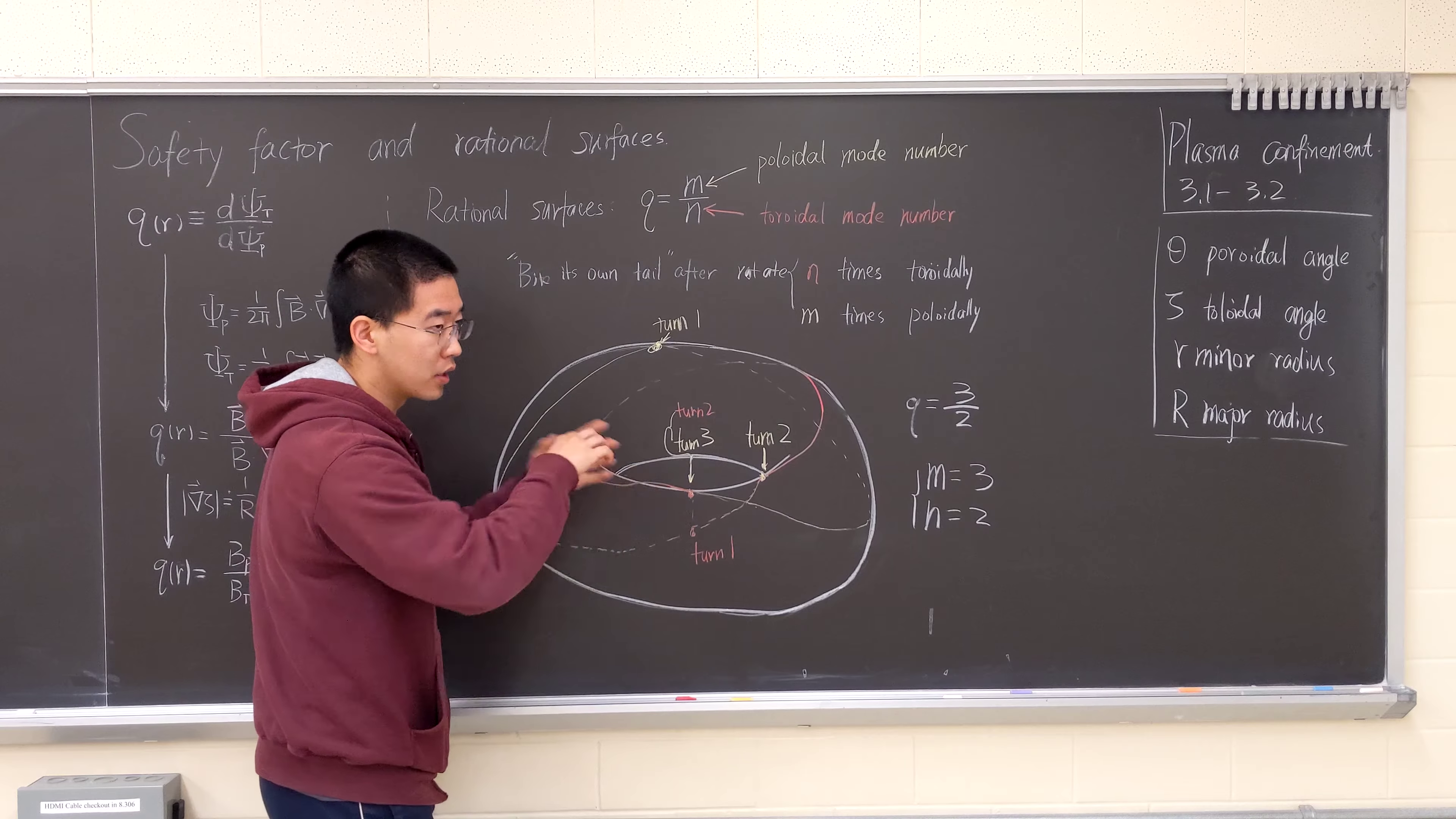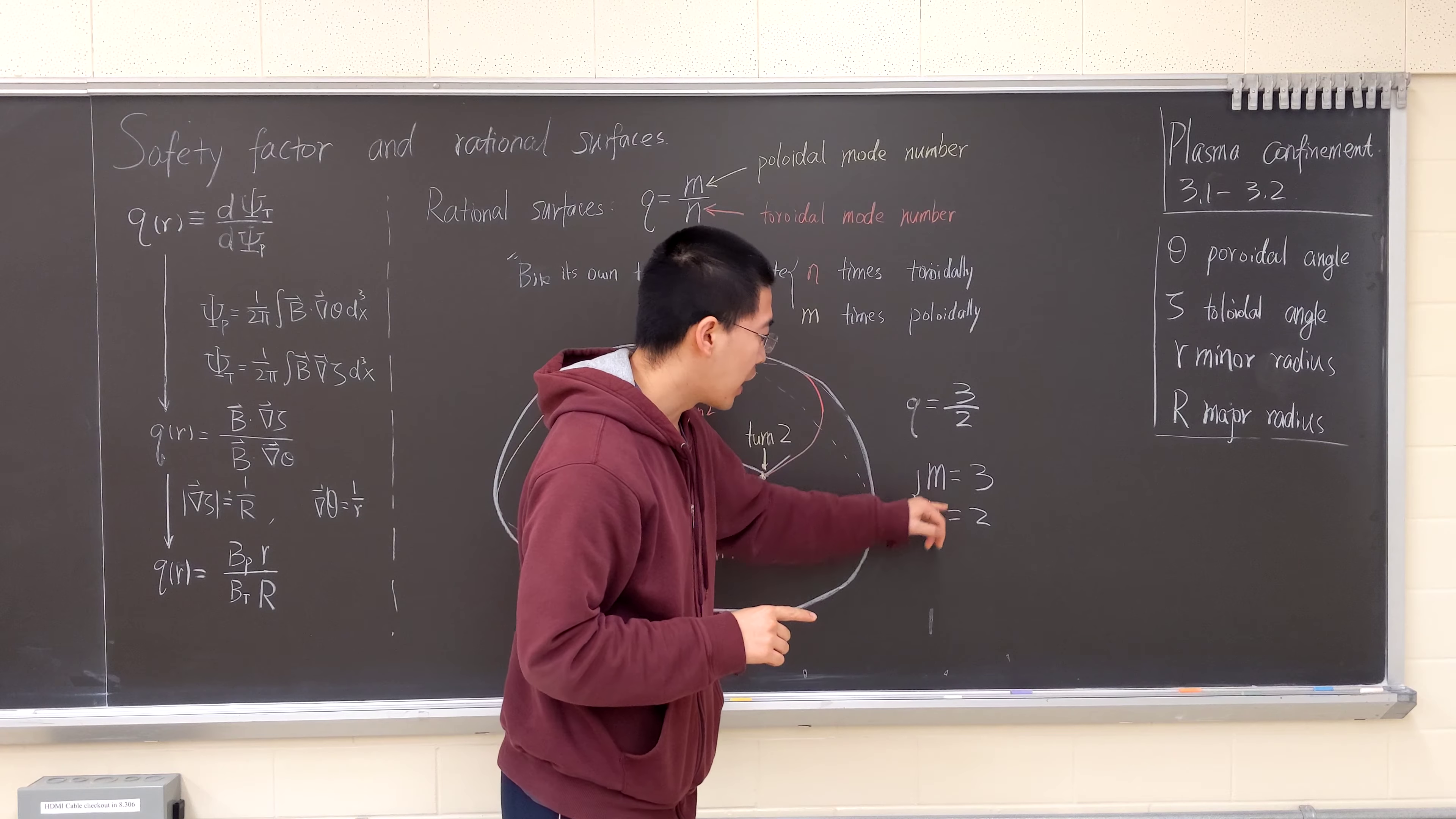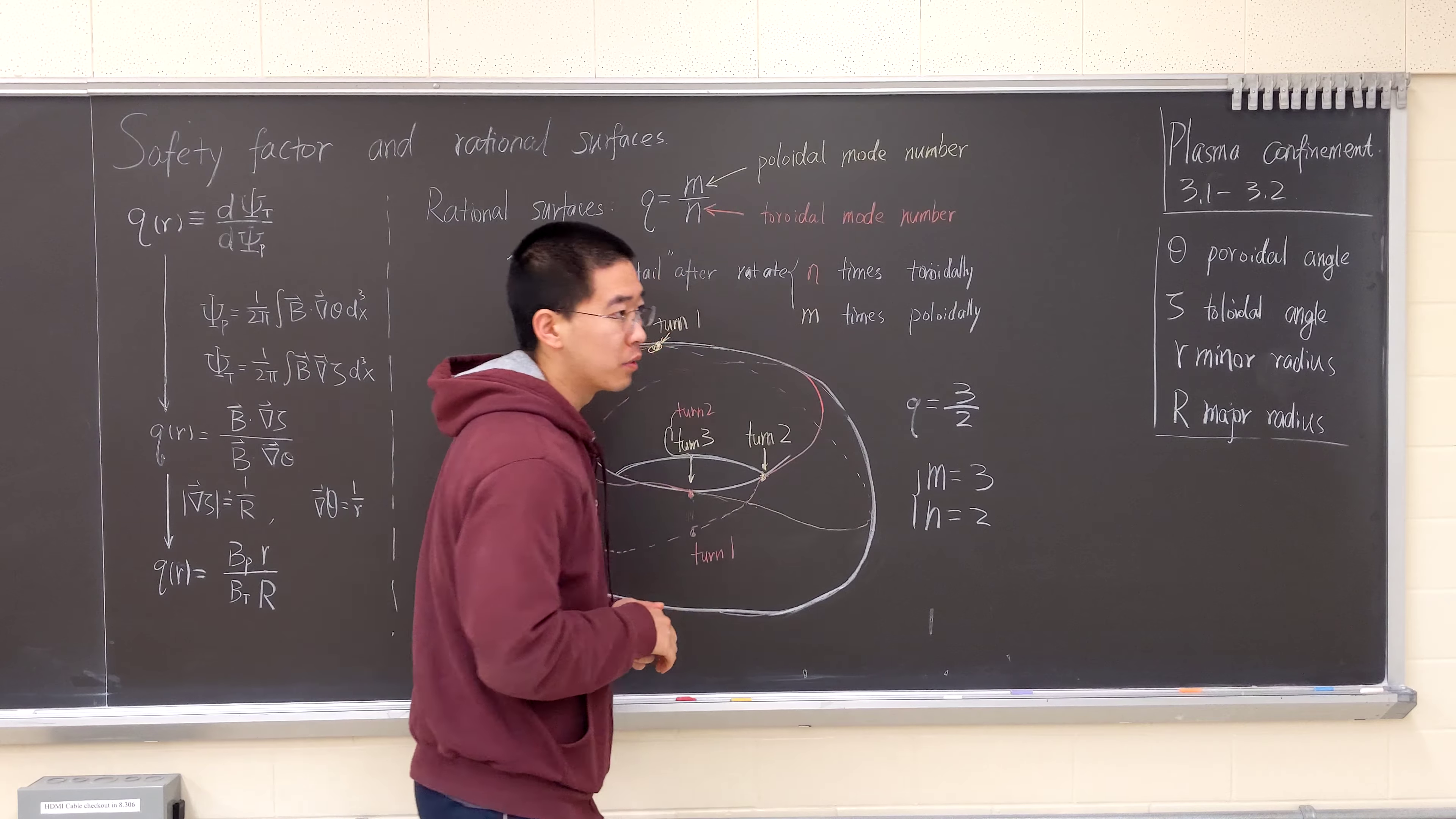So we know that in total it rotated poloidally three times, toroidally two times. So m equals three, n equals two. Then the safety factor for this rational location is 1.5.